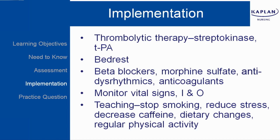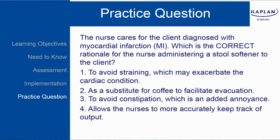Teaching will include stopping smoking, reducing stress, decreasing caffeine, dietary changes, and regular physical activity. Now we have your practice question. The nurse cares for the client diagnosed with myocardial infarction — which is the correct rationale for the nurse administering a stool softener to the client? Options: to avoid straining which may exacerbate the cardiac condition; as a substitute for coffee to facilitate evacuation; to avoid constipation which is an added annoyance; or allows the nurse to more accurately keep track of the output.